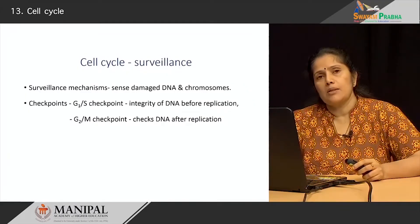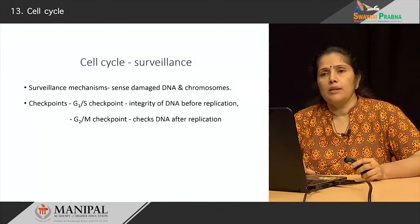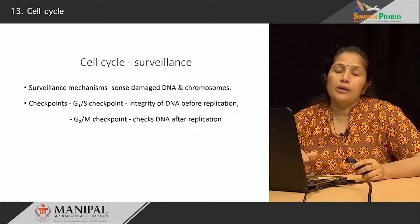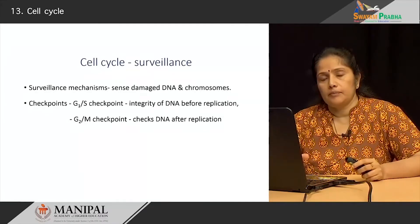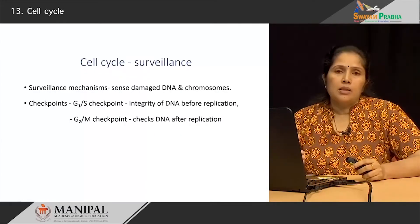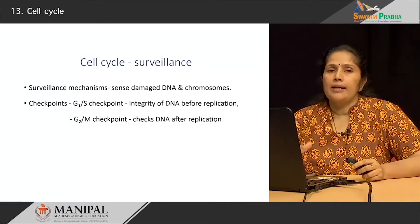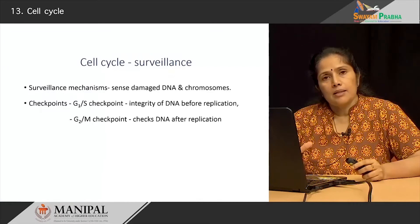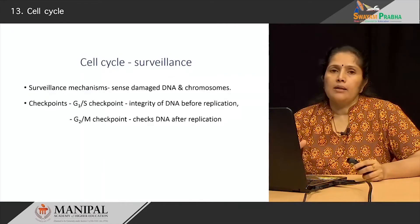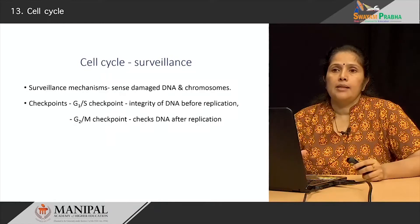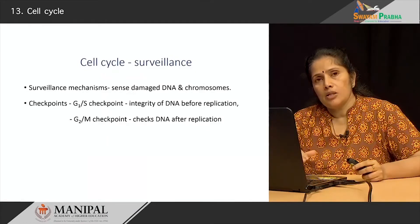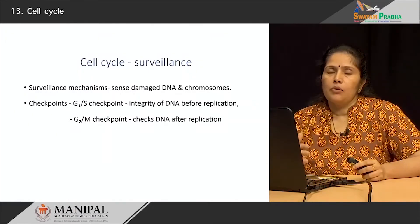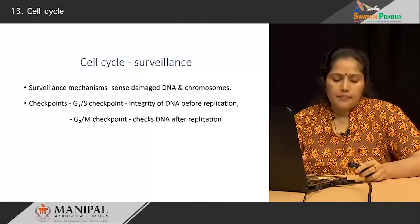At the G1-S checkpoint, the cell looks for the integrity of the DNA before replication. Just before replication is going to occur, the G1-S checkpoint checks whether DNA integrity is maintained. The second checkpoint occurs after DNA replication at the G2-M checkpoint. So you have two checkpoints — one before replication and one after replication.